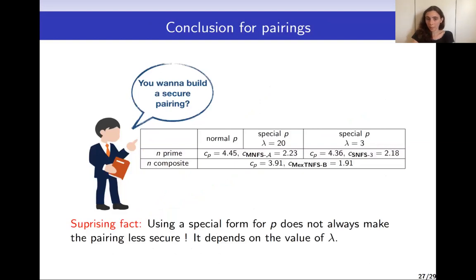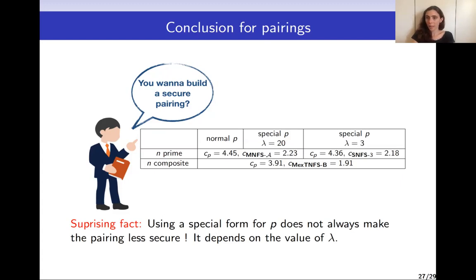This is summarized in a table. For example, if we take N prime non-composite and a normal P with no special form, the best algorithm to solve DLP for the finite field is the Multiple Number Field Sieve with polynomial selection A, and the crossover point is at CP equals 4.45. This allows one to define a precise P and corresponding N to define the finite field needed to construct a secure pairing.